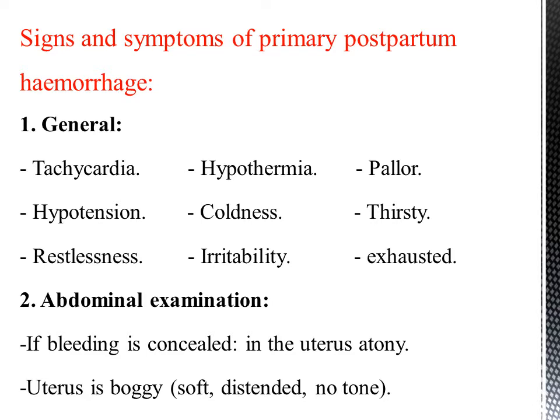Signs and symptoms of primary postpartum hemorrhage — General: tachycardia, hypothermia, pallor, hypotension, coldness, serious thirst, irritability, restlessness, exhaustion. Abdominal examination: if bleeding is concealed in the uterus, the atonic uterus is soft, distended, and has no tone.